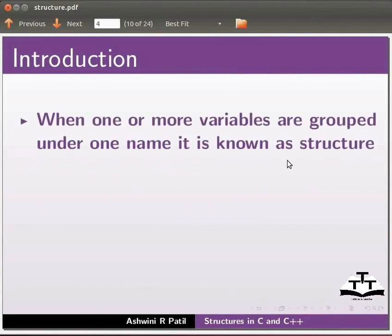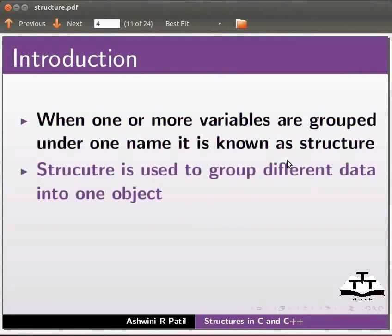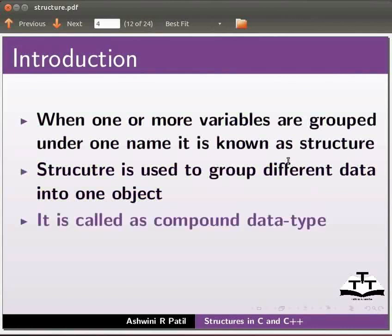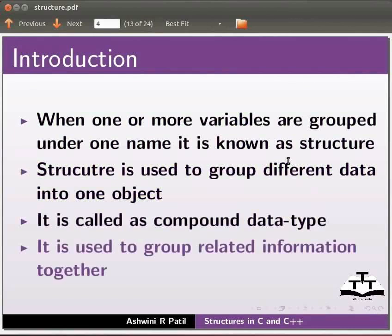When one or more variables are grouped under one name it is known as structure. Structure is used to group different data into one object. It is called a compound data type. It is used to group related information together.